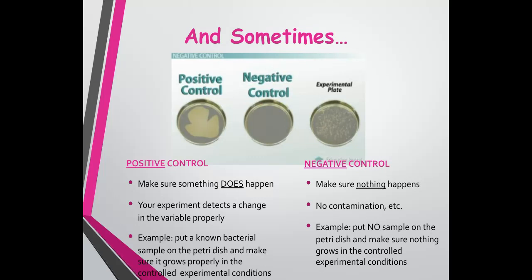The negative control is the opposite — that's to make sure nothing is happening, that there's no contamination in your results. For example, if you have a petri dish and you never put a sample of bacteria on it, then nothing should grow in it. It's just another way to make sure you have a controlled experimental condition and are getting correct results from your independent variable.